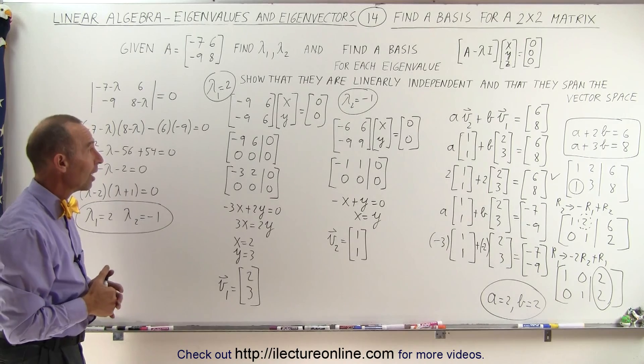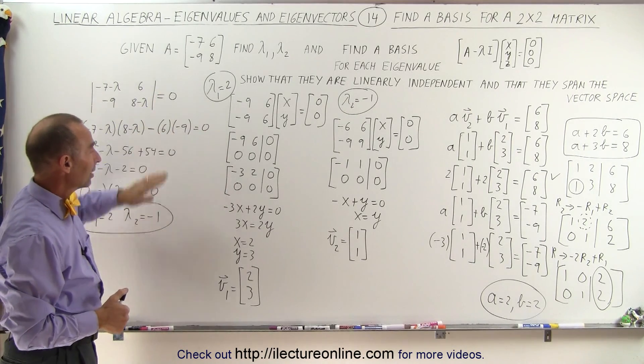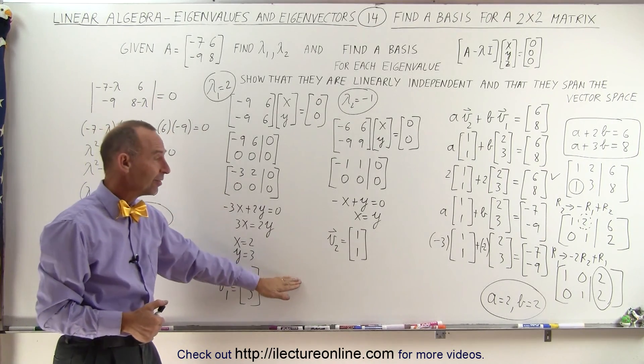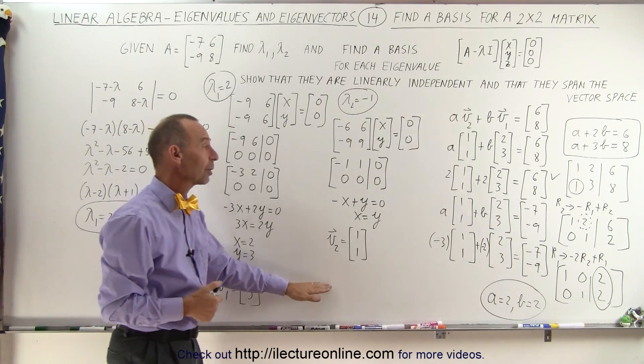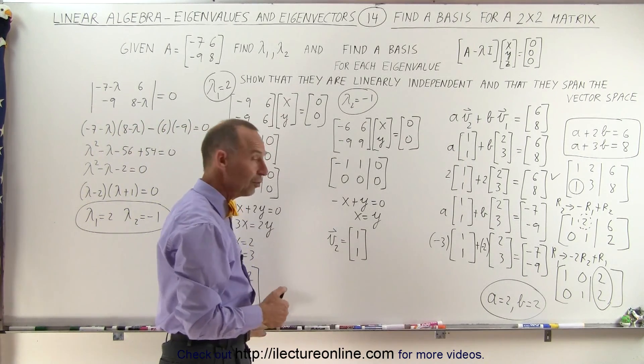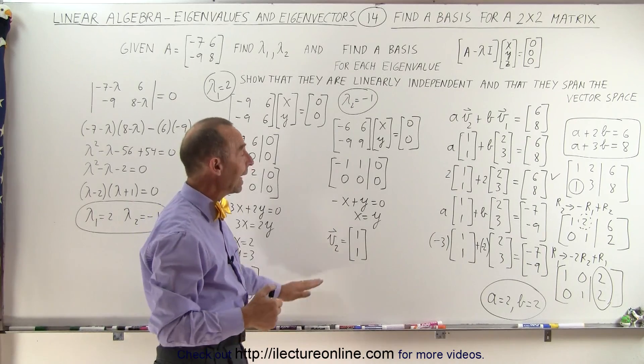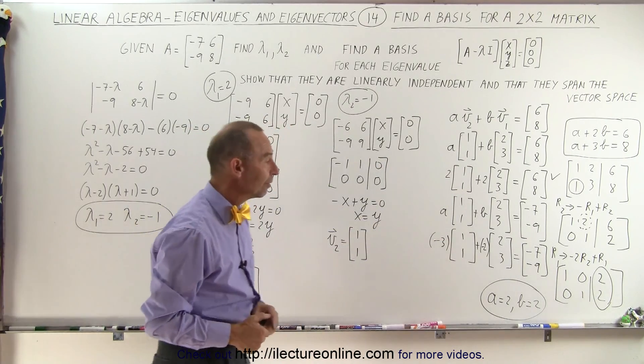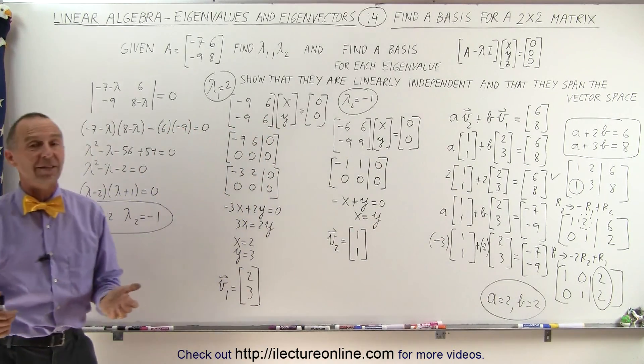So here is how we find the eigenvalues, the eigenvectors, which form the basis of the vector space, and then we can also show that the individual vectors are linearly independent and that they span the vector space. And that's how it's done.